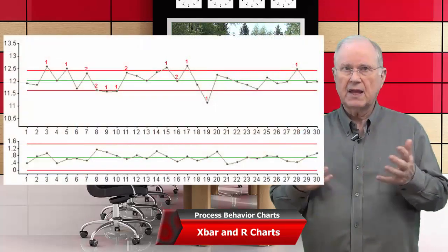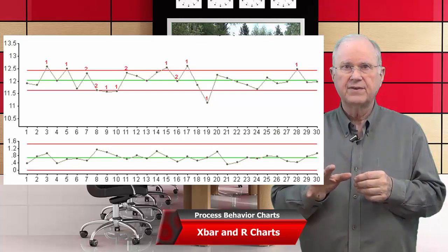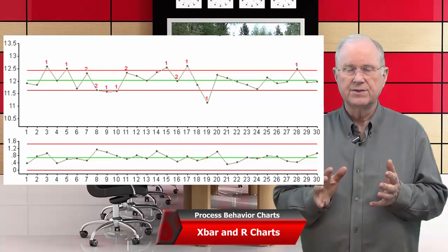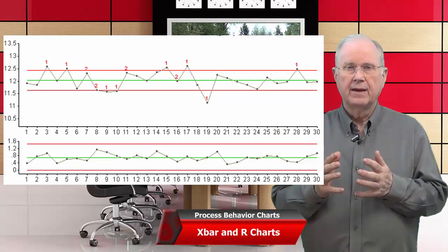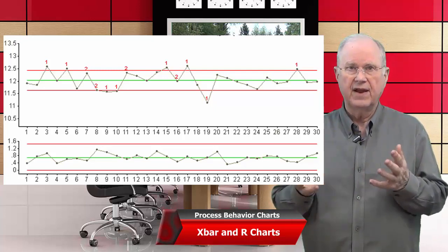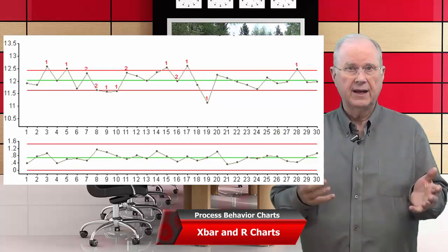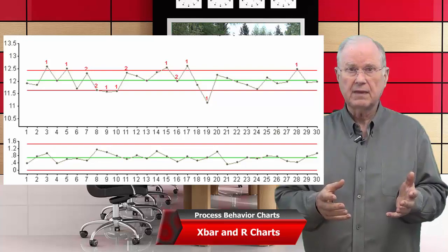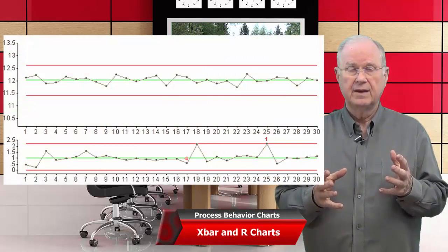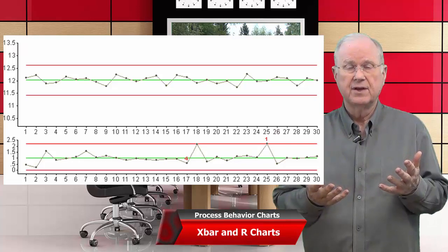Here's an example using synthetic data about filling beverage containers. Our rational subgroups were five consecutive containers off the same machine, same shift, same operator, same batch of materials — that is a rational subgroup. The rules for interpretation are about the same as Individuals and Moving Range. The math for the limits is a little different, a little fancier. But if you can do Individuals and Moving Range charts, you can understand and interpret X-bar and R. I took the same data set and broke up the rational subgroups, and what we get is just a couple of little blips — everything that you would want to know is concealed rather than revealed.